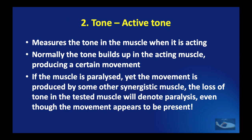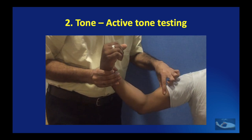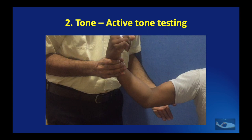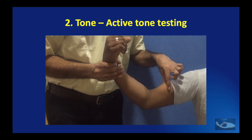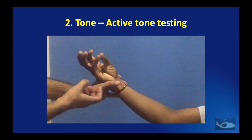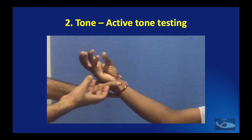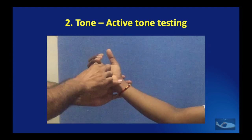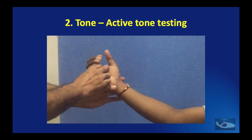The active tone measures tension within the muscle when it is acting. Normally, tone builds up in the acting muscle to produce movement. If a muscle is paralyzed yet movement is produced by a synergistic muscle, the loss of tone in the tested muscle will denote paralysis even though movement appears present. For example, during active elbow flexion, the biceps muscle should be palpated. Similarly, while testing thumb abduction, the abductor pollicis brevis should be palpated to confirm an increase in tone if the muscle is intact.